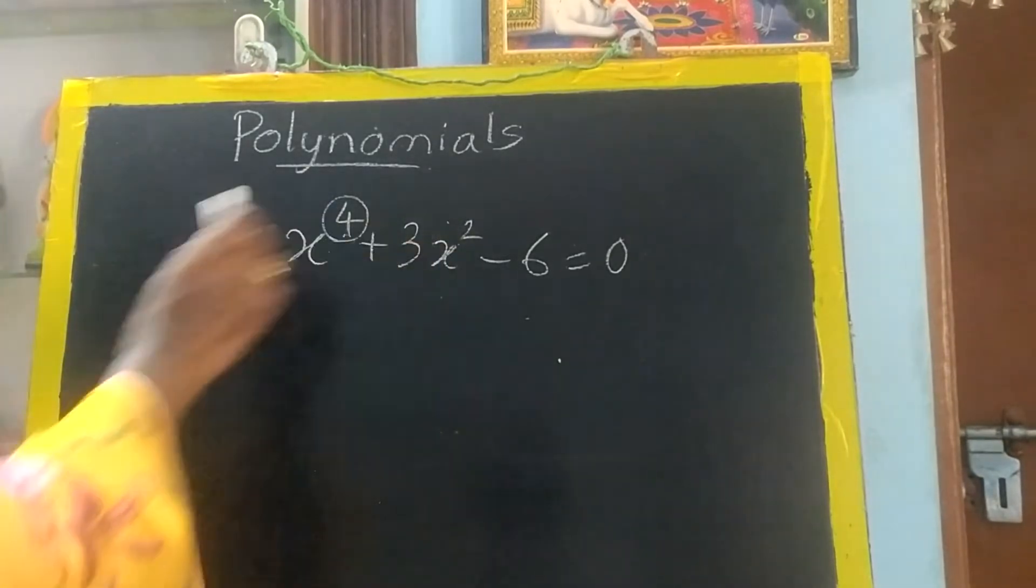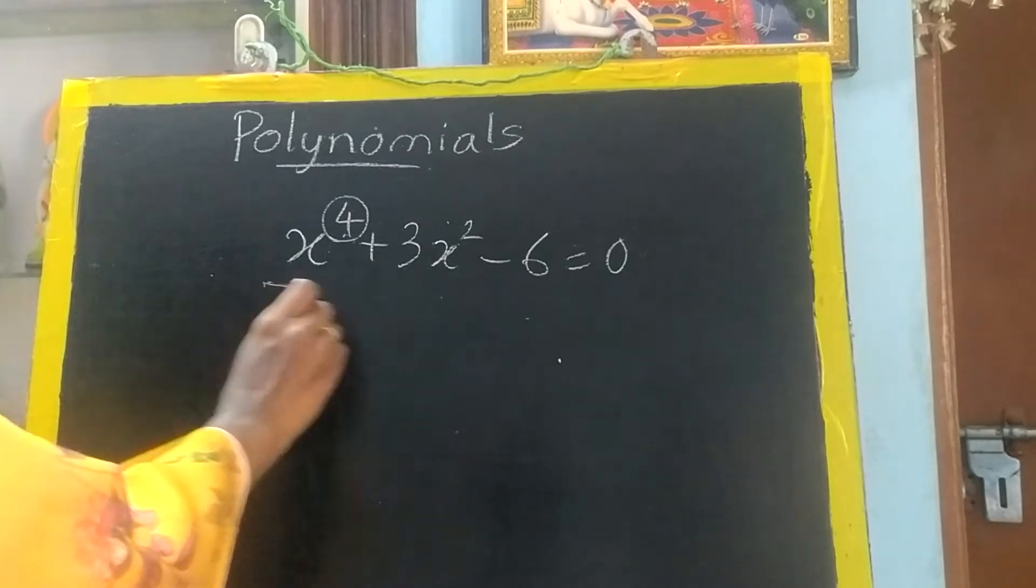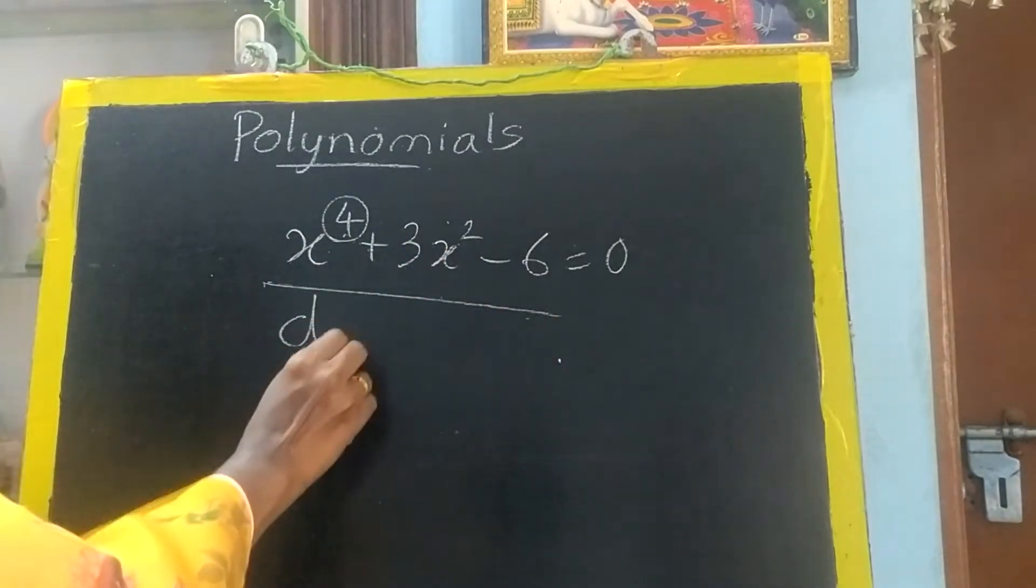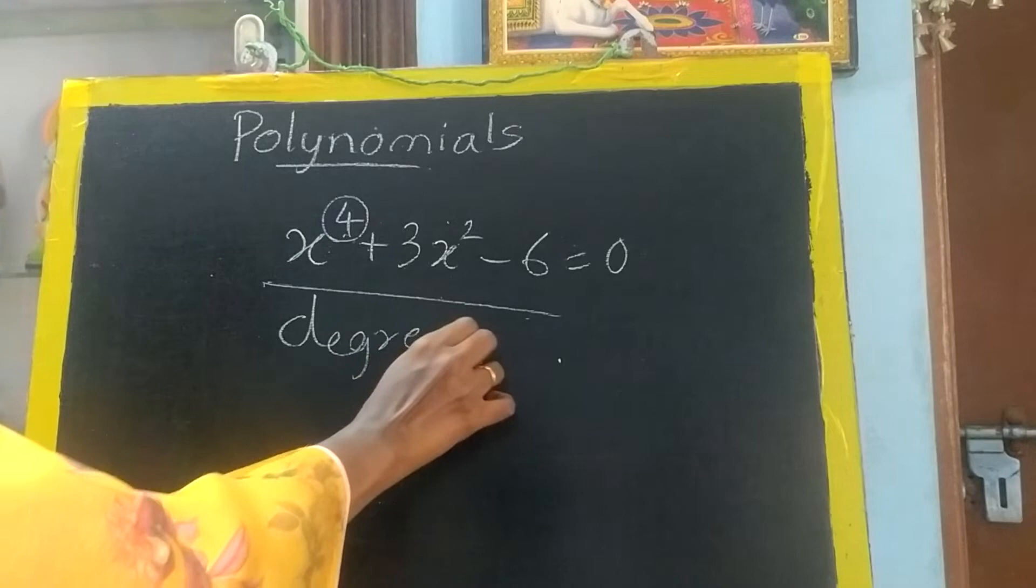4 here, 2 here, so which is highest? 4. So the degree of the polynomial is 4. The highest only we will say as degree.